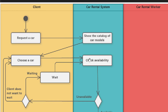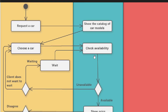Once the client chooses a car, the system checks the availability of that car — whether it is available or has been given to someone else. This is a condition: if the car was available, the flow continues down; if not available, it goes to the left side.